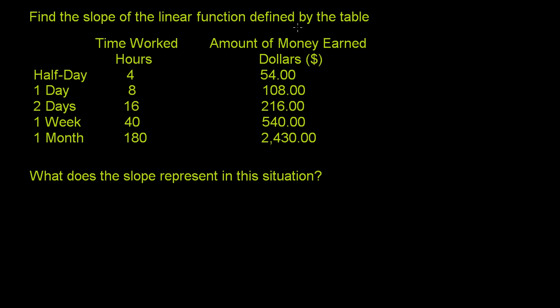Find the slope of the linear function defined by the table. They give us a table here. They define certain amounts of shift lengths, and then they say how many hours is a half a day, is a full day, is two days, is a week, is a month.